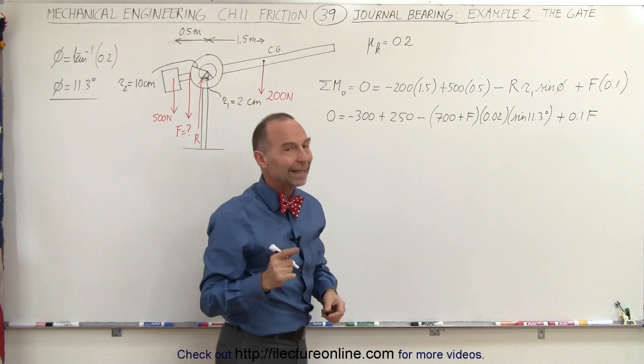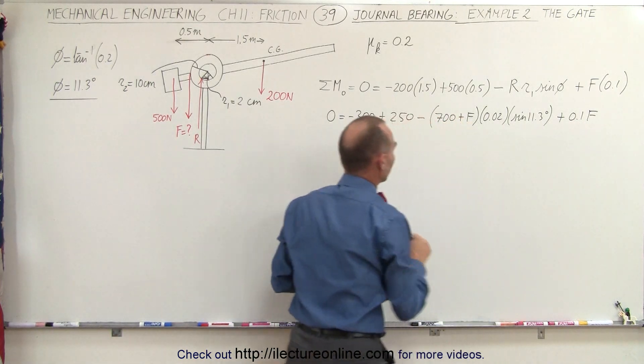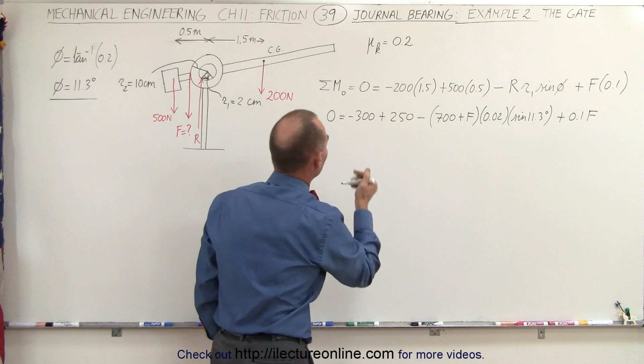Now, notice in this equation, we get F twice, so when we solve for F, we have to pull it out of both terms. Now, let's simplify this a little bit more.